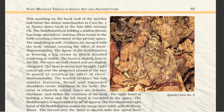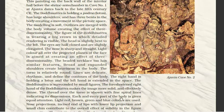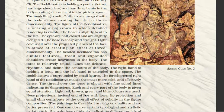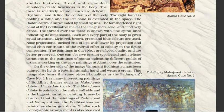The right hand is holding a lotus and the left hand is extended in space. The Bodhisattva is surrounded by small figures, and the foreshortened right hand makes the image more solid and effectively dense. The thread over the torso is shown with fine spiral lines. Red, brown, green, and blue colors are used, and the nose projections, lower lip projections, and small chin contribute to the overall effect of solidity. One can observe certain typological and stylistic variations in the paintings of Ajanta, indicating different guilds of artisans working on the cave paintings over the centuries. On the other side of the image, Vajrapani Bodhisattva has been painted.